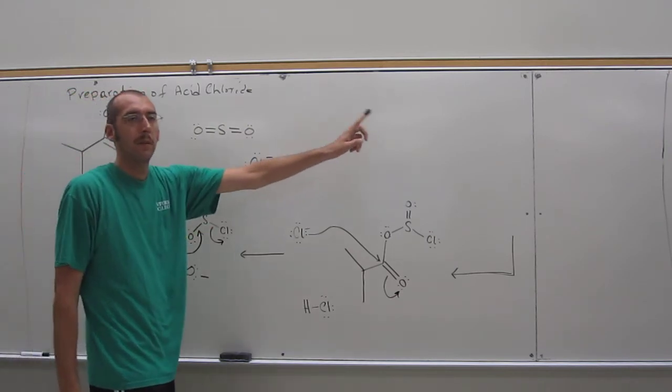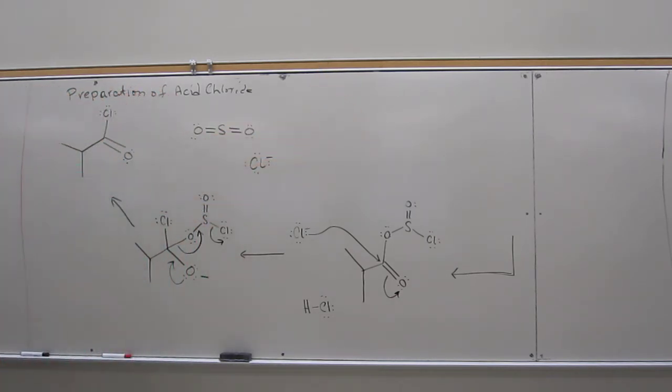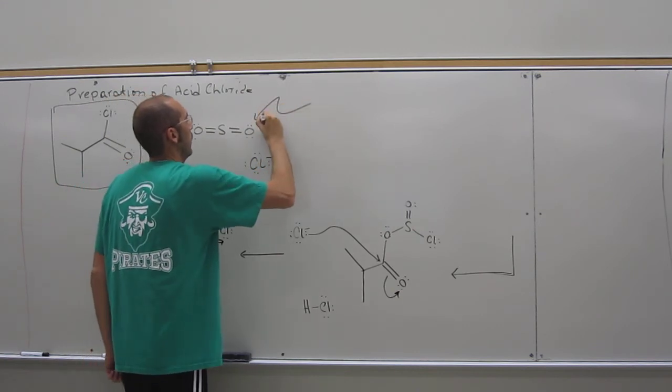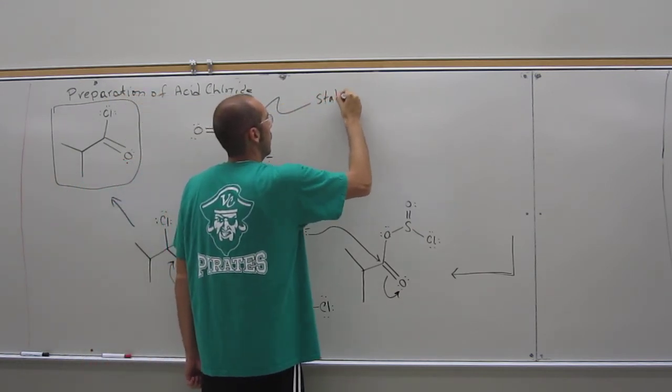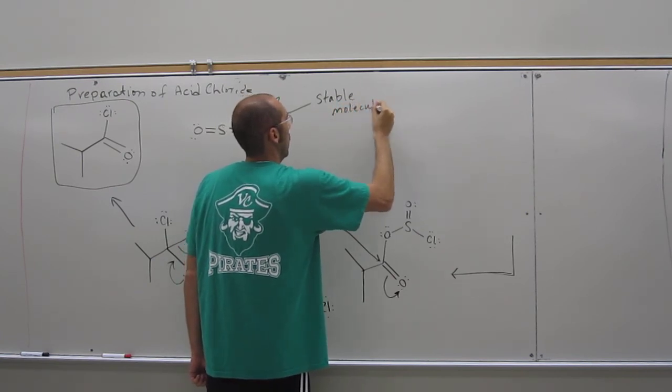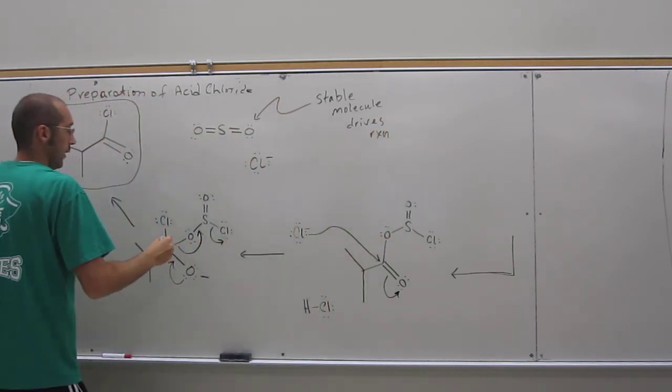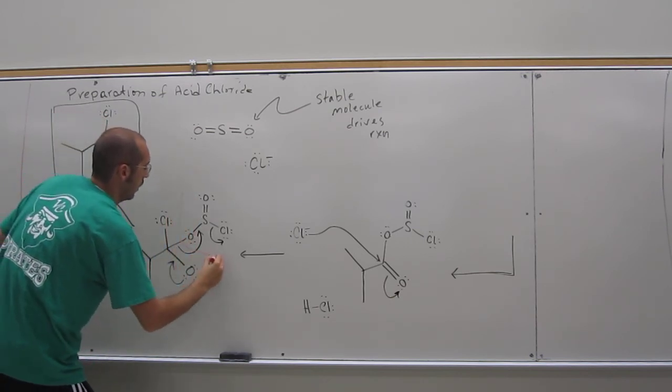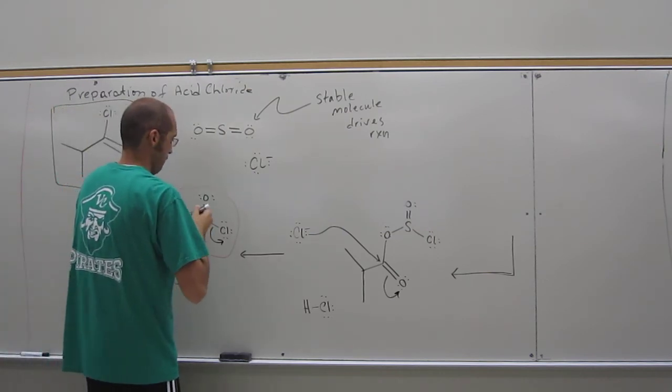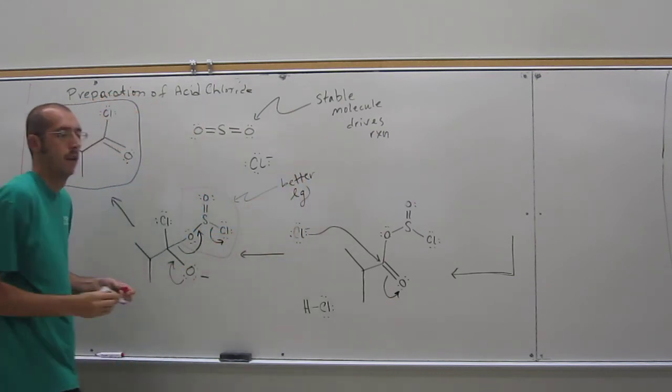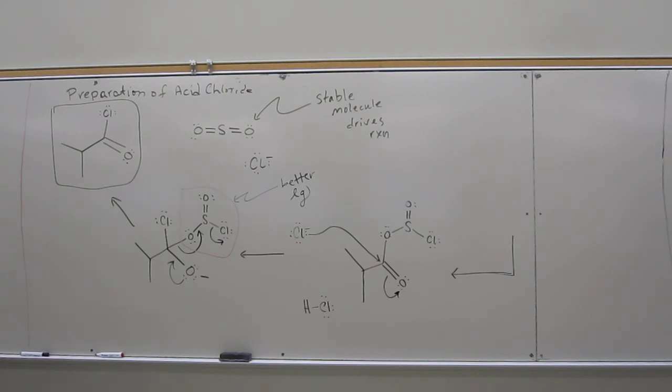So that's the Cl minus that was going to be in the next step, going to deprotonate. So I guess this is the organic product that we were concerned about. This is the stable molecule that drives the reaction and makes this portion here the better leaving group. Is that cool? Any other questions on my phone? So that's it?